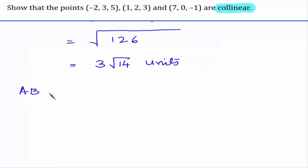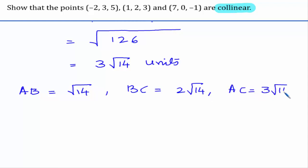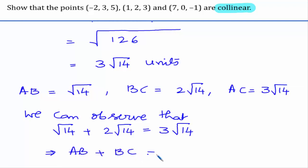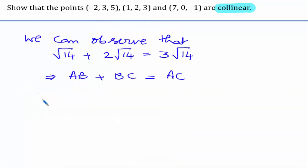AB is square root 14, BC is 2 root 14, and AC is 3 root 14. We can observe that root 14 plus 2 root 14 equals 3 root 14. That implies AB plus BC equals AC. Therefore, we can say that A, B, C are collinear.